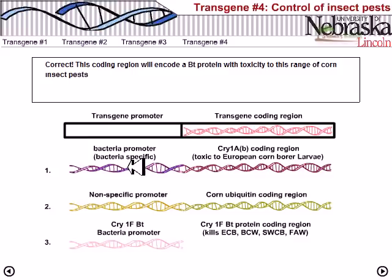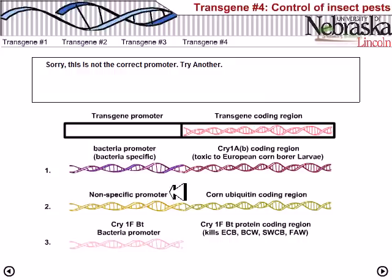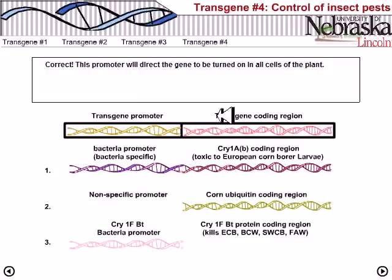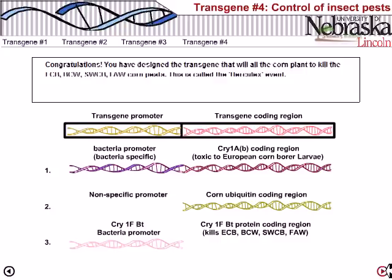However, we must take the promoter from gene two, which contains the promoter for the ubiquitin protein coding region. When we take this ubiquitin promoter, it can produce ubiquitin and, along with the transgene coding proteins, the ubiquitination pathway helps kill all four types of worms. We have designed the transgene that will allow corn plants to kill ECB, BCW, SWCB, and FAW pests.